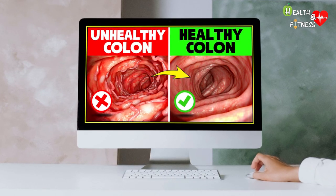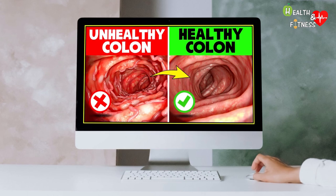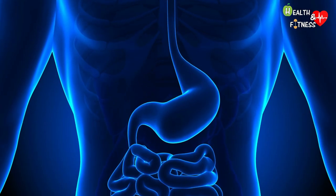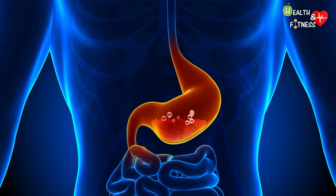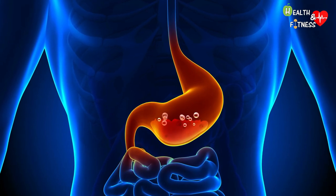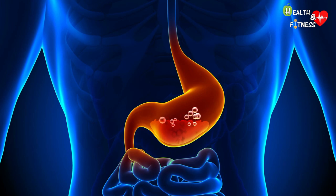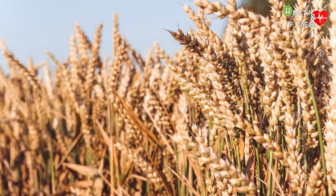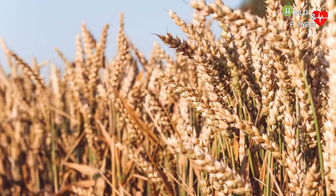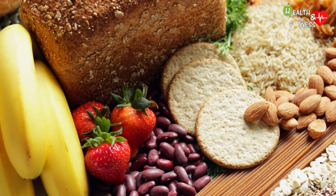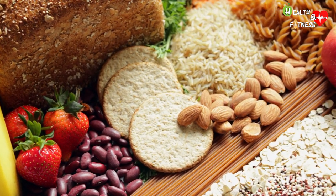Dietary fibers are all those organic substances that the enzymes of our digestive system are unable to digest and therefore absorb, as they resist the action of the digestive juices of the gastrointestinal tract. Dietary fibers are the main components of the cell wall of plants.